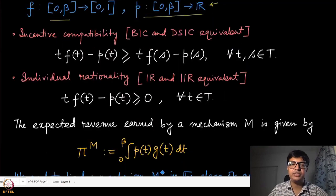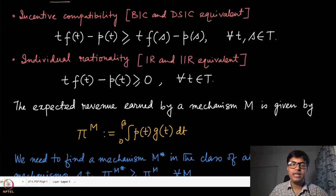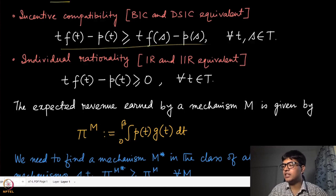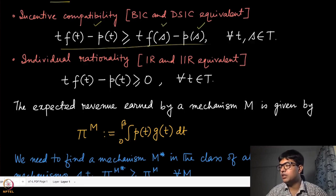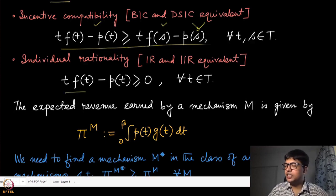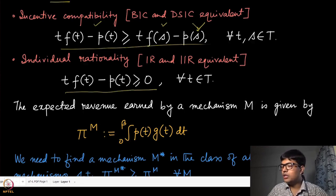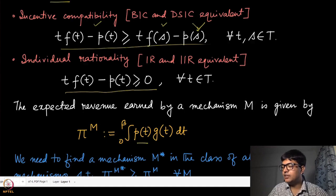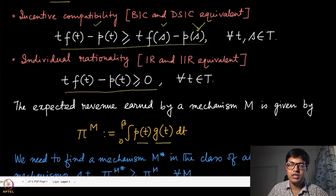In this setup, because there is exactly one agent, there is no belief system for other agents, so the BIC and DSIC definitions become the same. We can write the DSIC condition as: the player gets at least weakly better payoff when reporting truthfully versus misreporting to some type s. Similarly, individual rationality requires the expected utility of the agent to be non-negative.